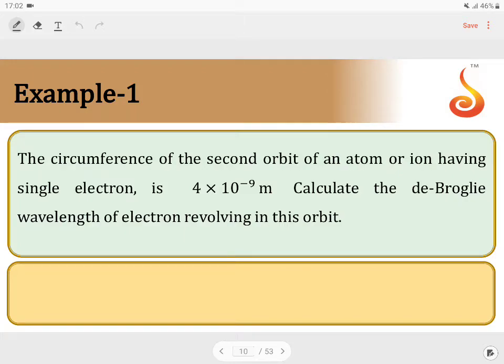The circumference of the second orbit of an atom or ion having single electron is 4 into 10 power minus 9. Calculate the de Broglie wavelength of the electron revolving in this orbit.